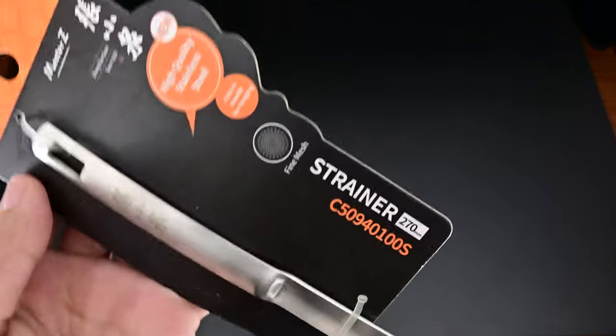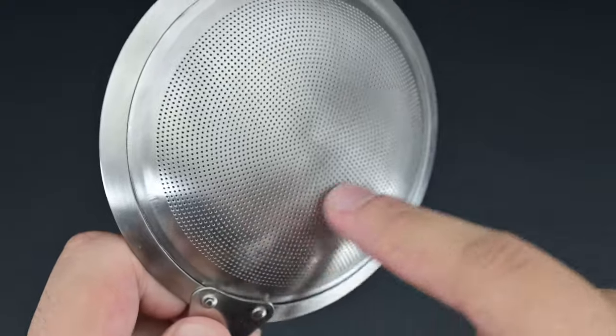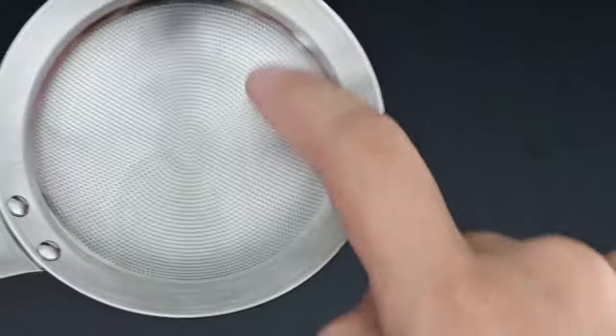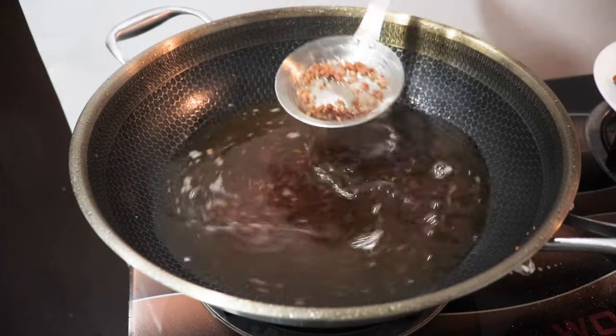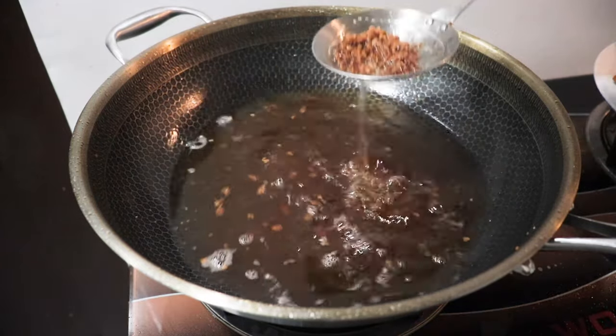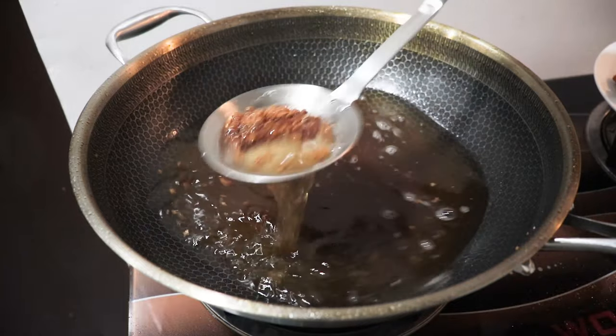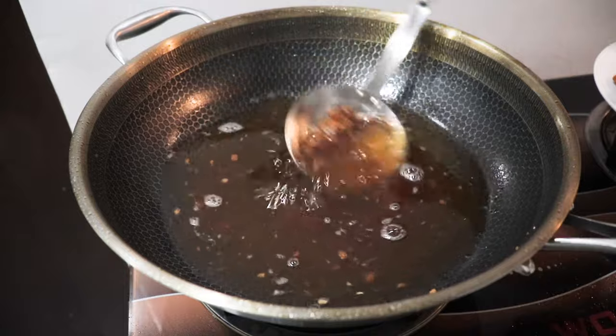This is the strainer everybody looks for. This is from Master Z, the link's down below. It has very thin holes. Made of very good stainless steel. This is good for your deep frying journey. Remove any floating bits from the oil, some powdery flour burnt bits. You can also remove scum from soups and many other different applications using this strainer.